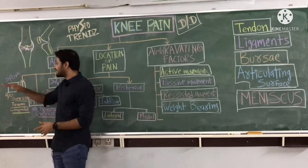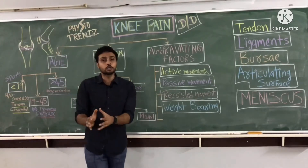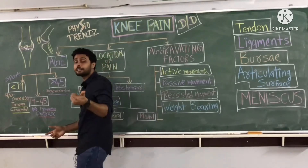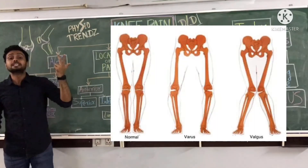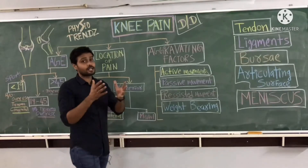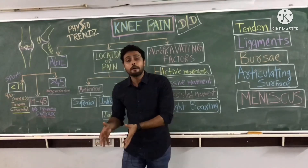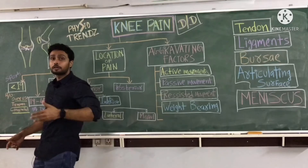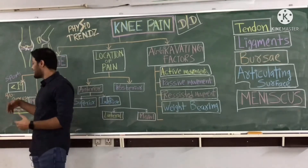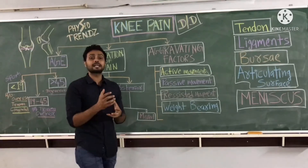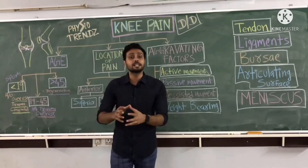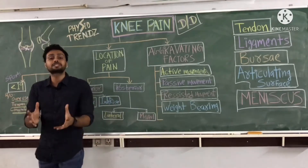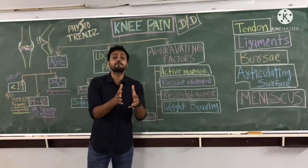In the less-than-19 age group, knee pain can be due to congenital conditions like genu recurvatum, genu valgum, or genu varum if not corrected properly. Any abnormal forces acting on the knee joint can cause pain, as well as overuse of muscles, tendons, and other structures, or trauma to muscles, ligaments, and bursae.